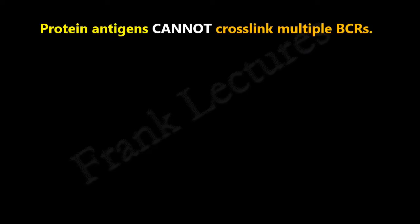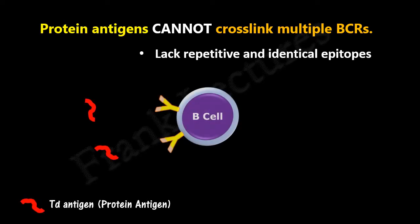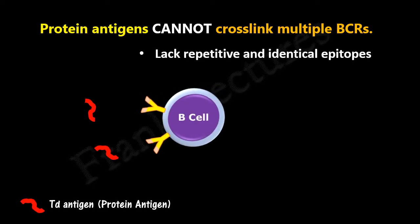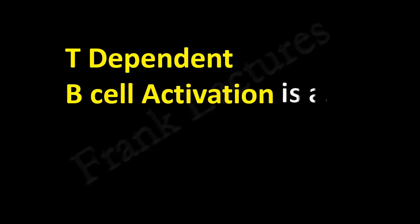Recall that protein antigens cannot cross-link multiple B-cell receptors. This is because in these antigens, repetitive and identical epitopes are absent. Thus, when B-cells encounter protein antigens, they require T-cell help to get activated. T-dependent B-cell activation is a three-signal process.